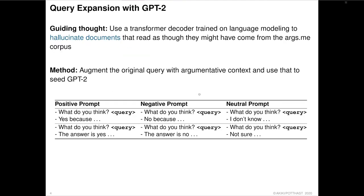Let me start by presenting our first approach: using a transformer decoder trained on language modeling. It's not specifically GPT-2 — there's nothing special about GPT-2 — it's just the representative candidate for these models, and that's what we use. The approach is to hallucinate documents, as it were, that read as though they might have come from the args.me corpus. The goal is not to generate perfect English text, but to generate text that's as good as a random user debating on an internet portal.